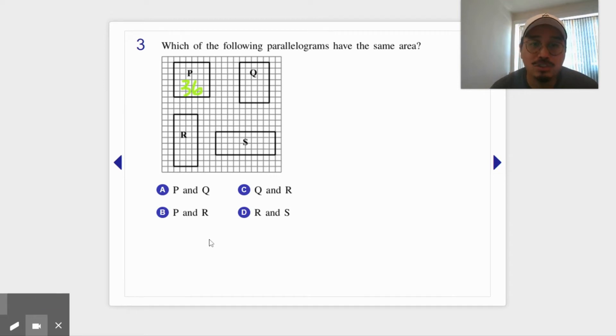The next one is Q. Let's see, one two three four five, one two three four five six seven. So five by seven, that's 35.